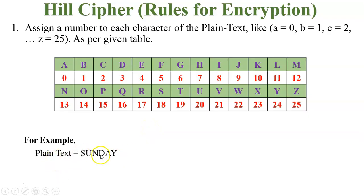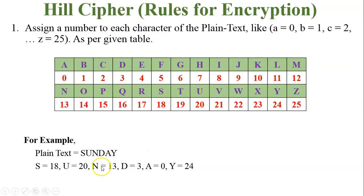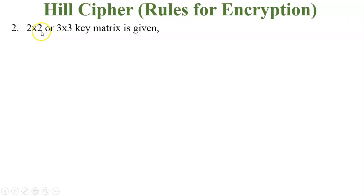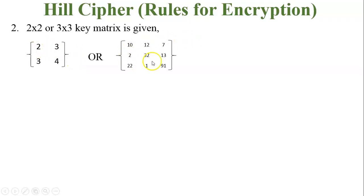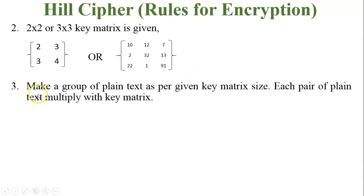For example, if plain text is SUNDAY: S=18, U=20, N=13, D=3, A=0, Y=24. The plain text is converted into numbers because the key is given in matrix form and a matrix holds numeric values. Rule 2 — a 2×2 or 3×3 key matrix is given. Rule 3 — make a group of plain text as per the given key matrix size.